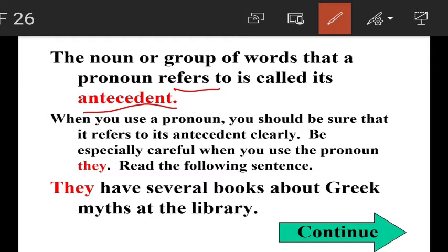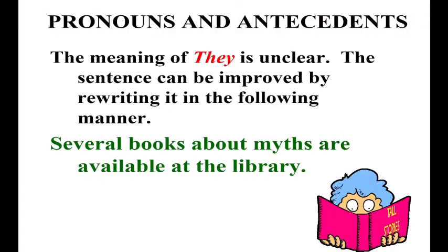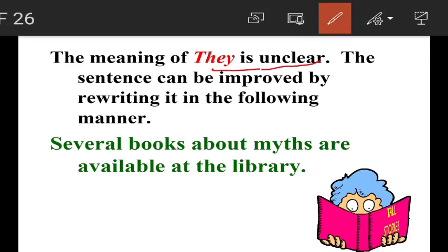When you use a pronoun, you should be sure that it refers to its antecedent clearly. Be especially careful when you use the pronoun they. For example: 'They have several books about Greek myths at the library.' Here, we don't know who they are — the meaning of they is unclear.